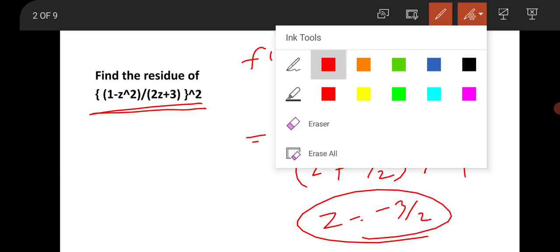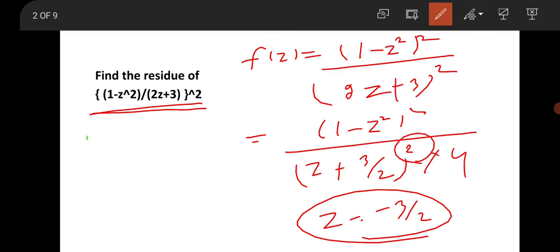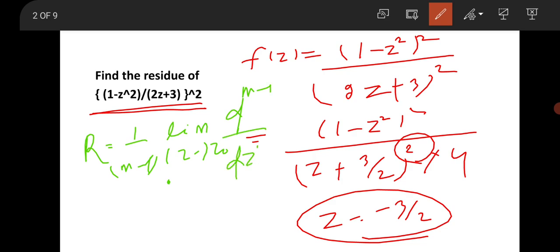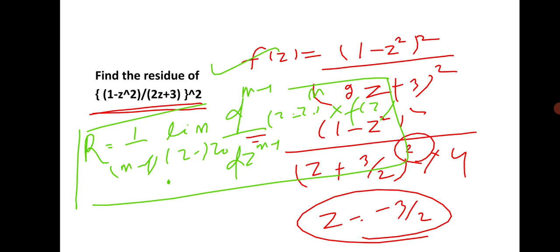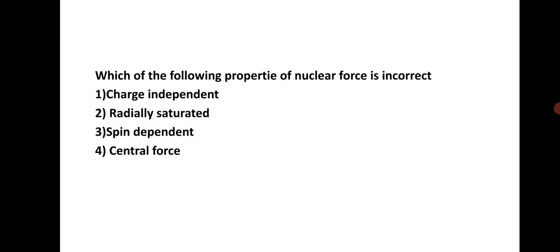To calculate the residue, use the formula: R = (1/(m−1)!) × lim[z→z₀] d^(m−1)/dz^(m−1) [(z − z₀)^m × f(z)]. By applying this formula you can calculate the residue of this function.